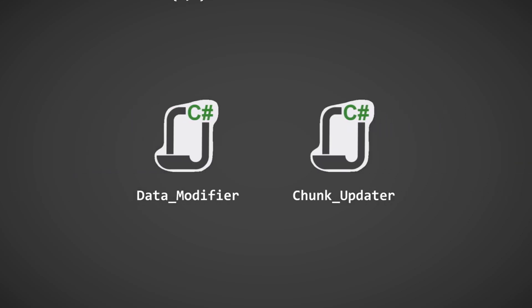The editing of terrain is awfully easy to implement. All it really is, is the changing of chunk data and updating the corresponding chunk at the given chunk data's coordinates.